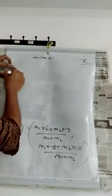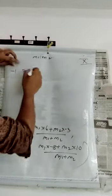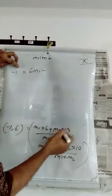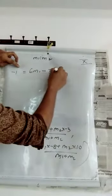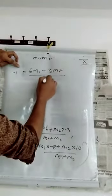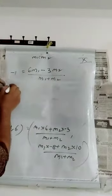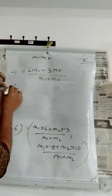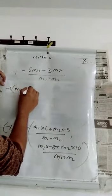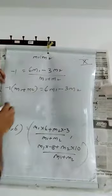Now what you can write? -1 equals M1 into 6, M1 minus M2 (-3) by M1 plus M2. Now you can cross-multiply. I'll tell you, cross-multiply here. -1, don't forget to put the bracket. If you forget the bracket, your answer will be wrong. (M1 + M2) equals 6M1 - 3M2.